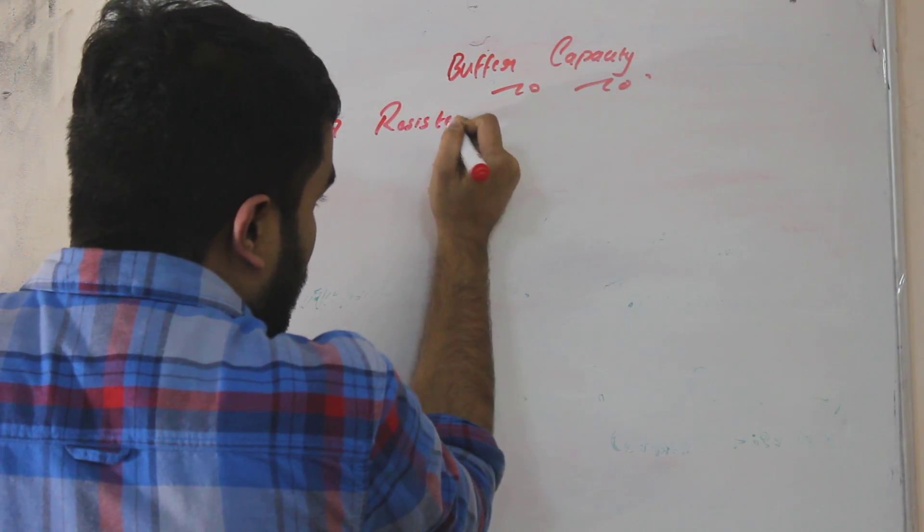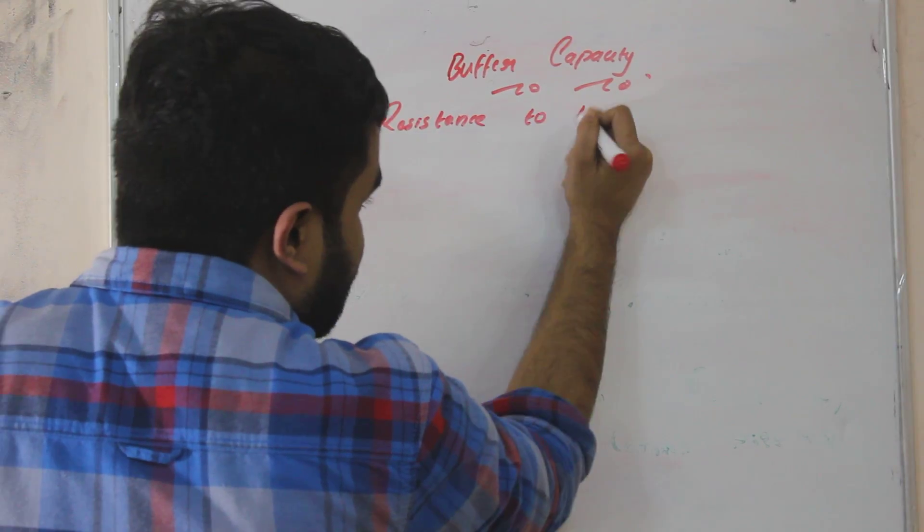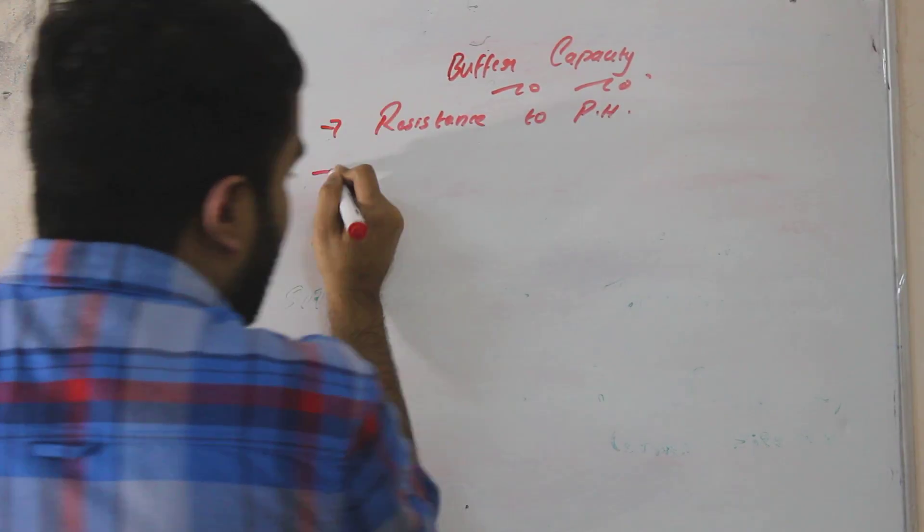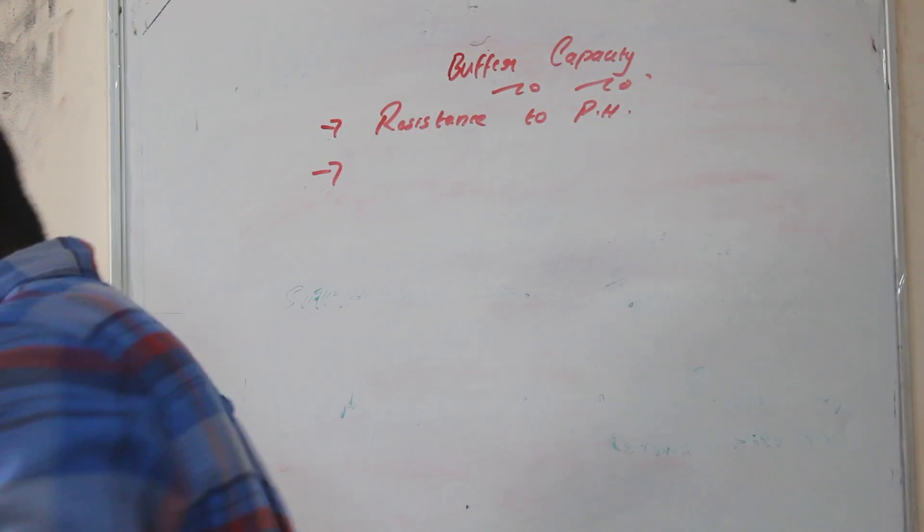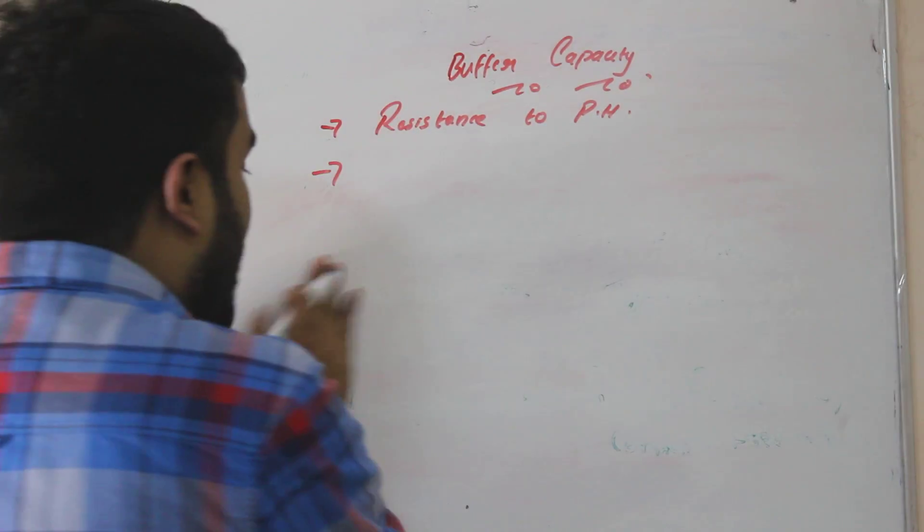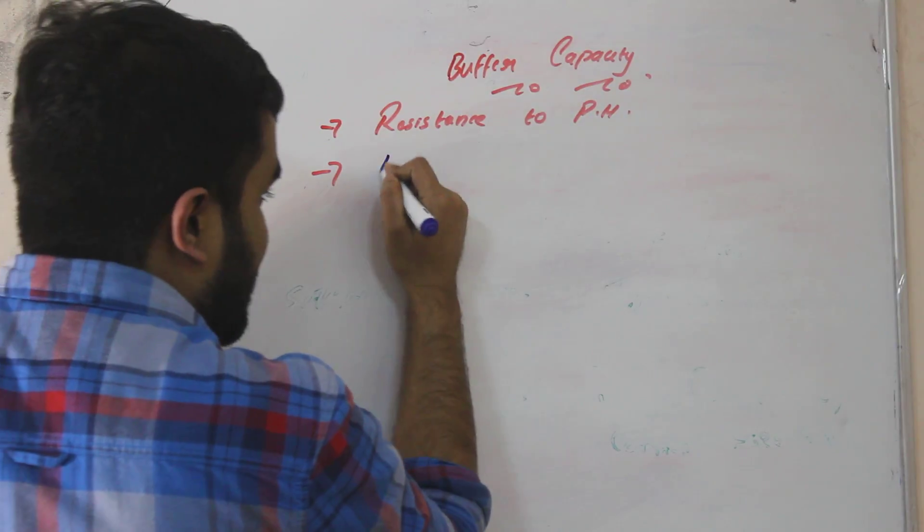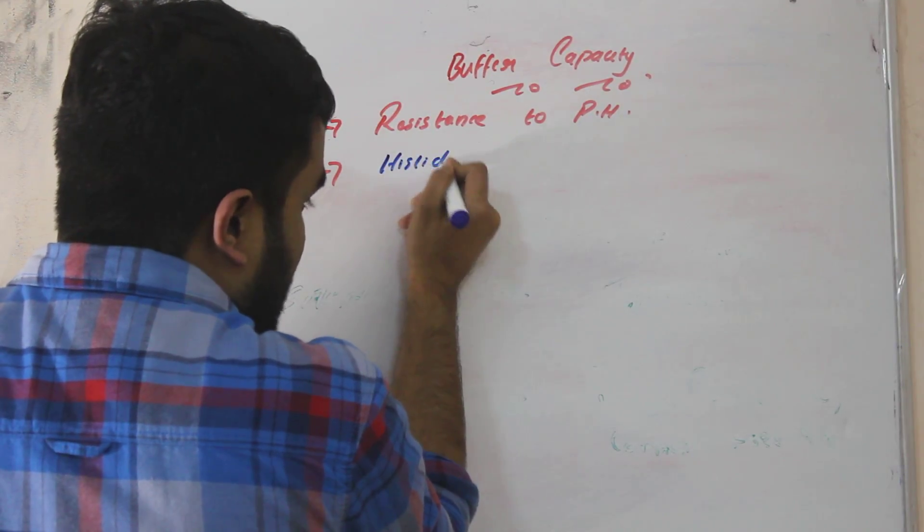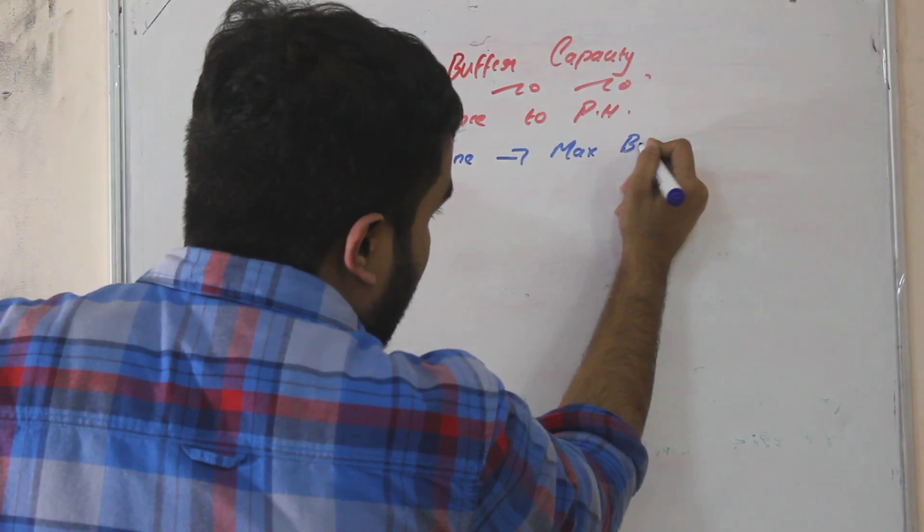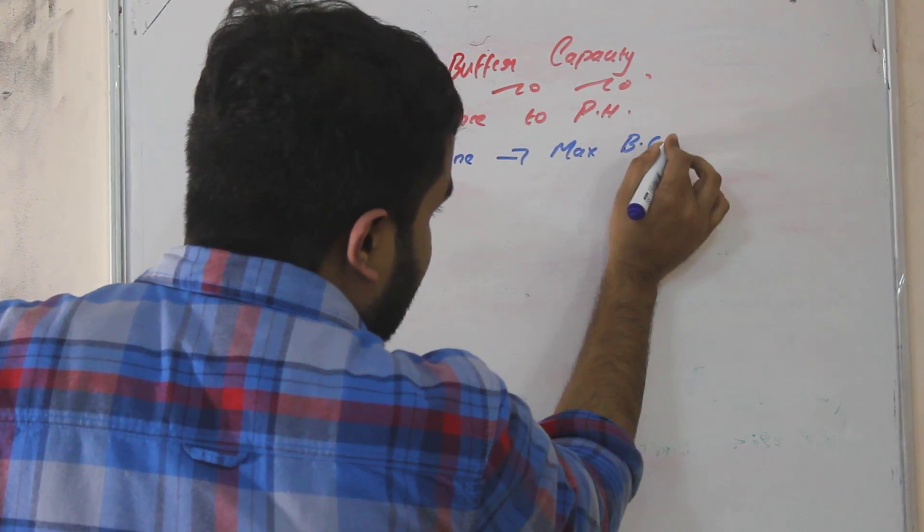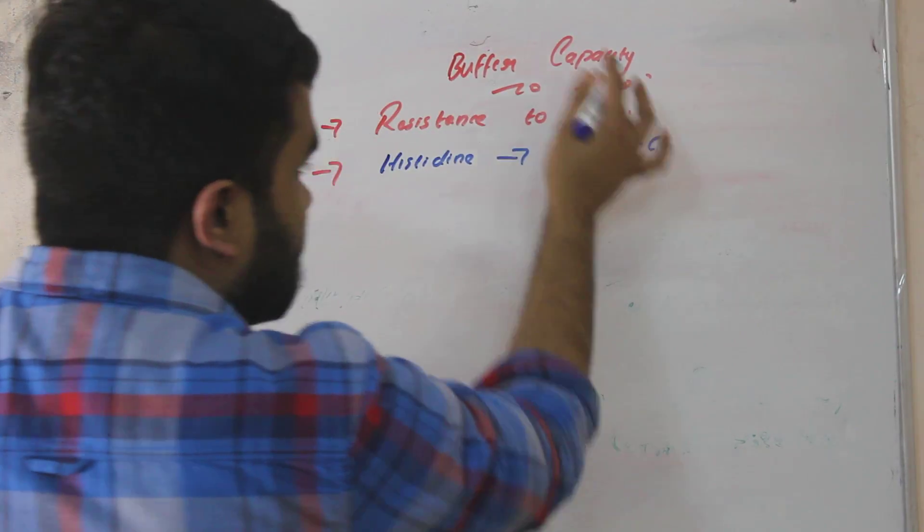So we are studying amino acid, so we have to know which amino acid is having maximum buffer capacity. That is histidine. Histidine is having maximum buffer capacity.